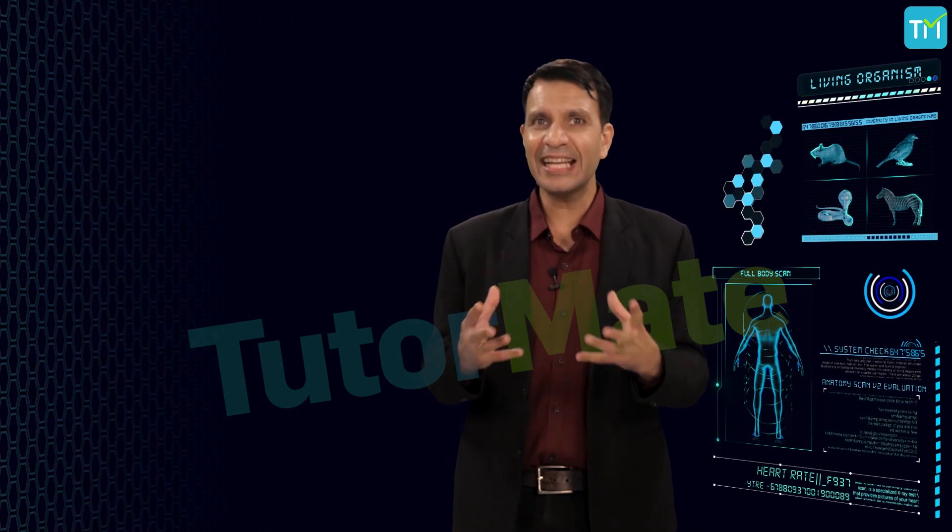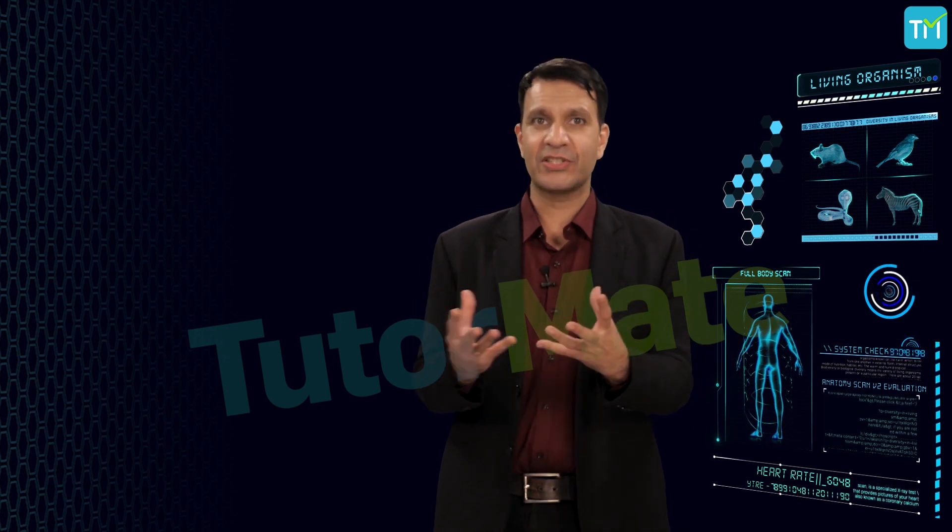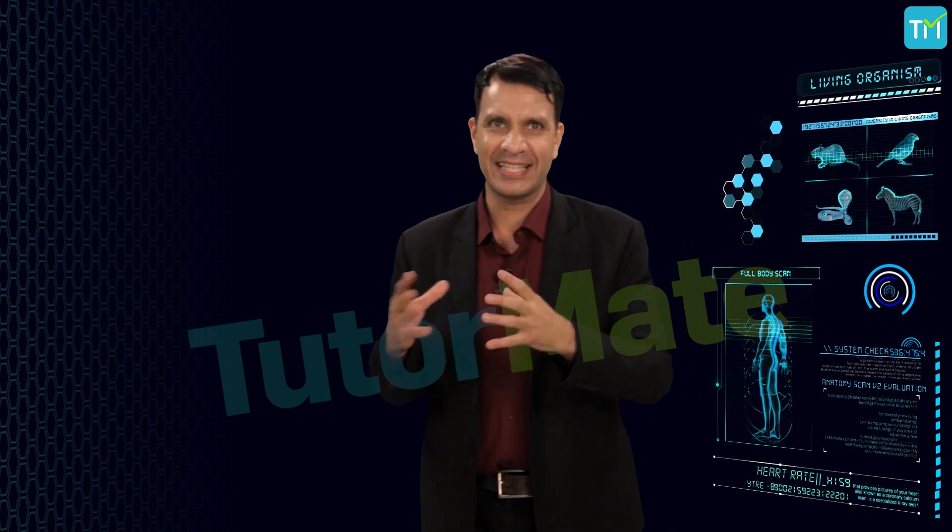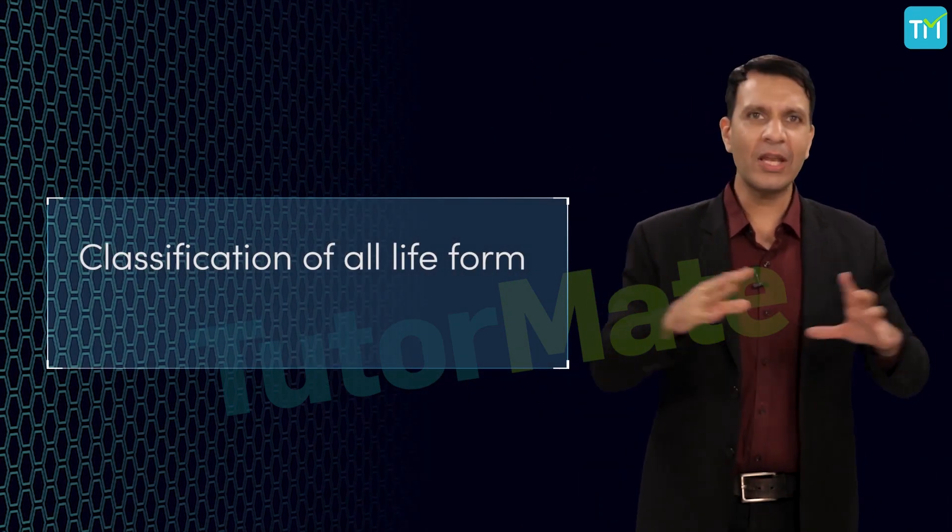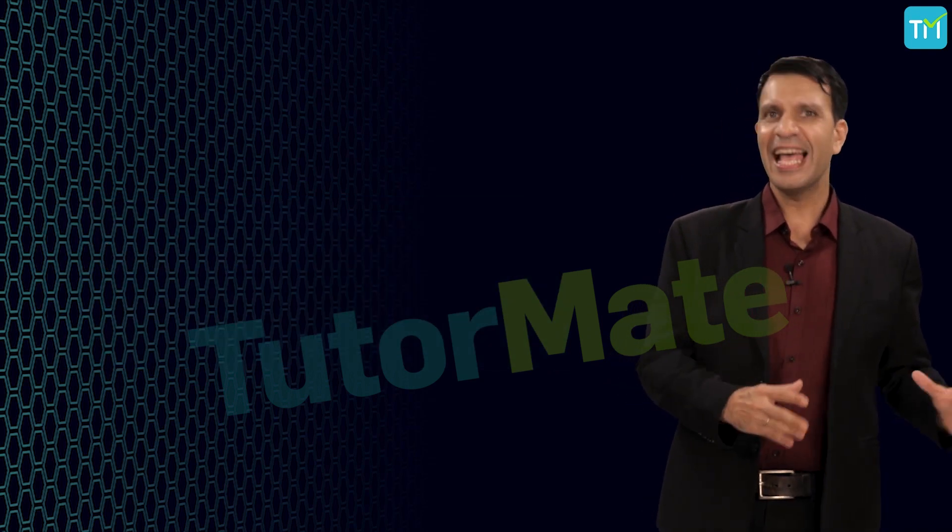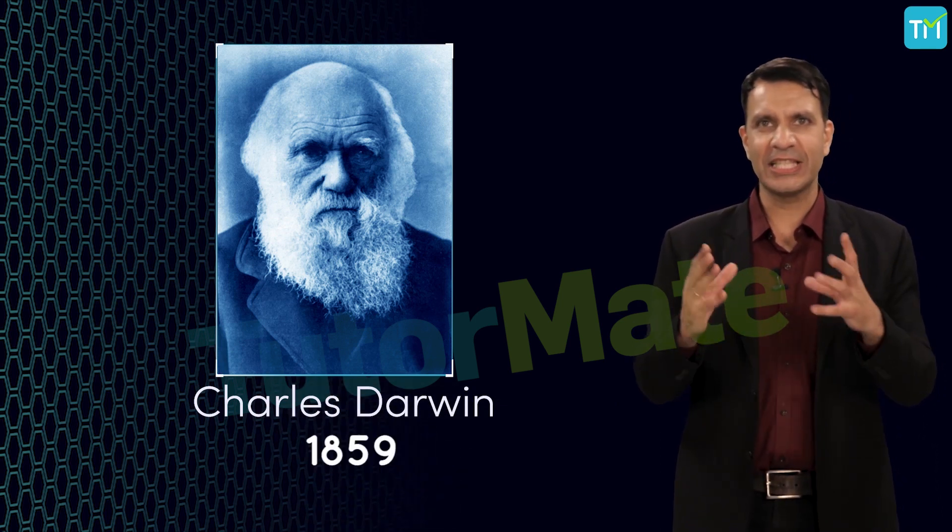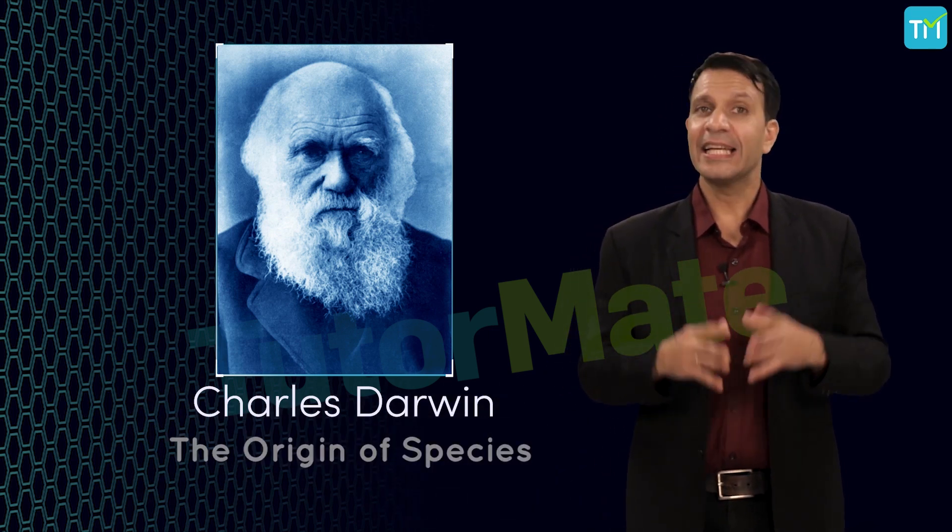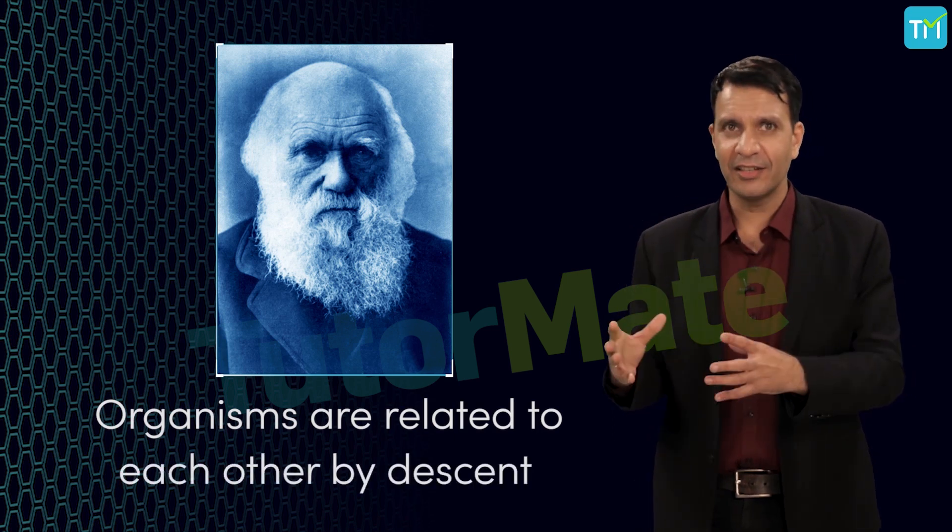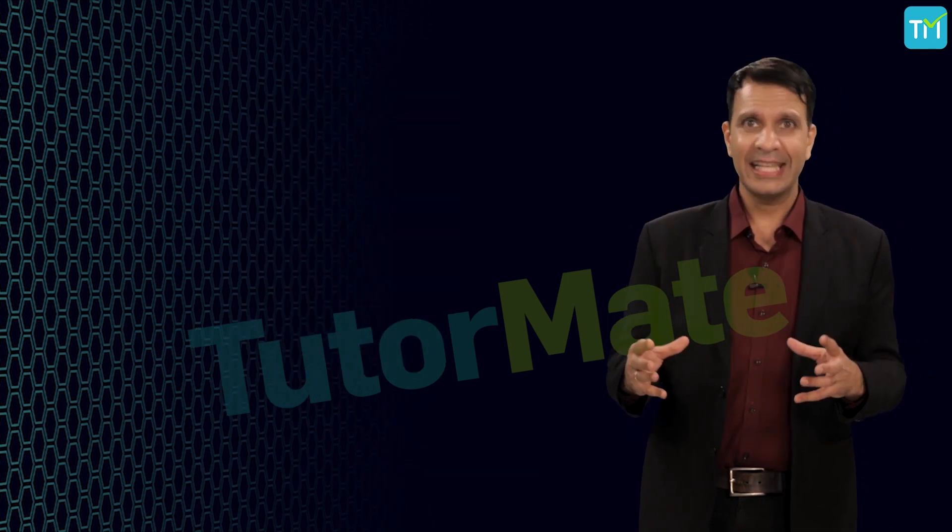So the classification of all life forms is closely related to their evolution. Charles Darwin first described the idea of evolution in 1859 in his book The Origin of Species. Darwin suggested that organisms are related to each other by descent. They had common ancestors from which they gradually evolved into their present form.